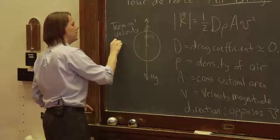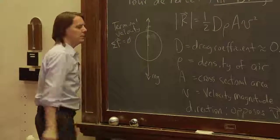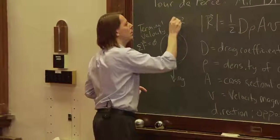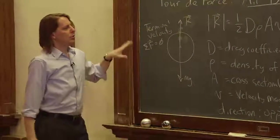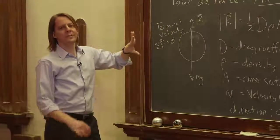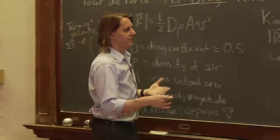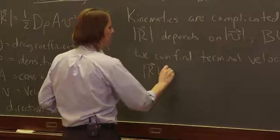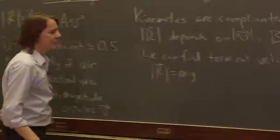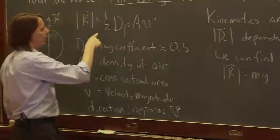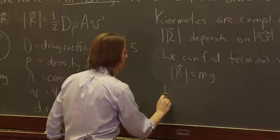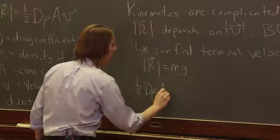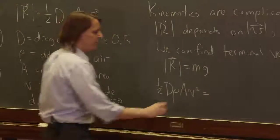Where the weight is balanced by R. So to figure that out, we don't have to do detailed kinematics. We just have to say when is that true. Well, that's true when the magnitude of R equals mg. So R was one half D drag coefficient, density of air, cross-sectional area, velocity squared, equals mg.